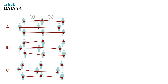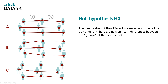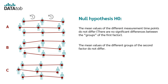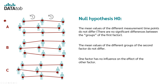We can now move on to the hypotheses. You can test three statements with the two-factorial analysis of variance, so there are three null hypotheses and three alternative hypotheses. The first null hypothesis is that the mean values of the different measurement times do not differ — there are no significant differences between the groups of the first factor. The second null hypothesis states that the means of the different groups of the second factor do not differ. The third null hypothesis reflects the interaction effect: one factor has no effect on the effect of the other factor.